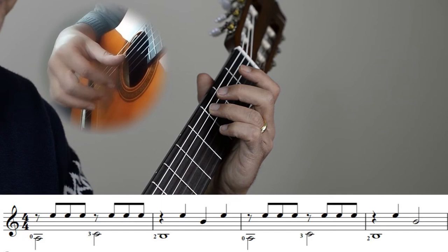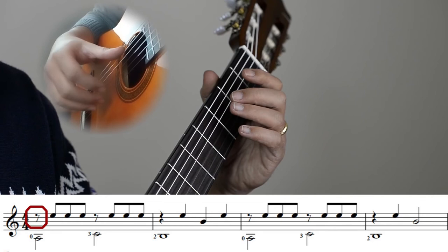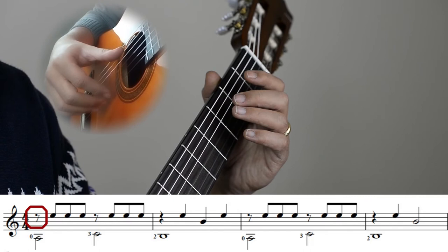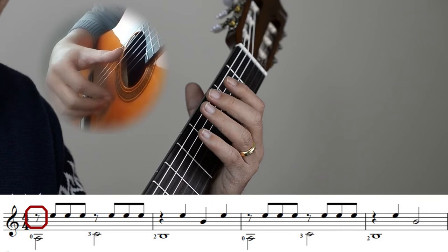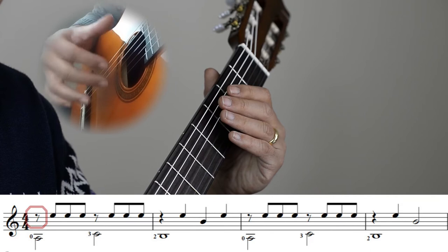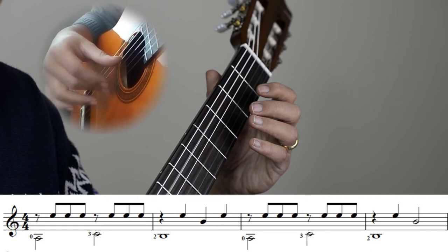Now the rest above the A and the C—this is an eighth note rest, which basically means we don't play a note on this one. When we play the A, we do not play any notes with it, so the count is 1 and 2 and 3 and 4 and.